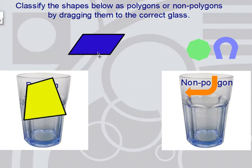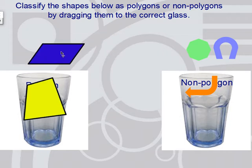Let's look at this shape. It has at least three sides — I see four. The lines are straight, they don't intersect, and it's a closed figure. So this is a polygon.